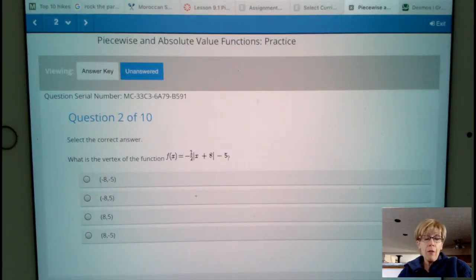What is the vertex of the function f of x equals negative one-half times the absolute value of x plus 8 minus 5?